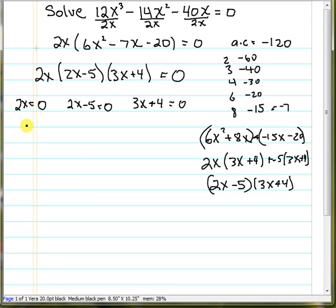So 2x equals zero, solve that by dividing by two, we get x equals zero. Here we need to add five, and divide by two, so we get x equals five halves. And here we subtract four, and divide by three.